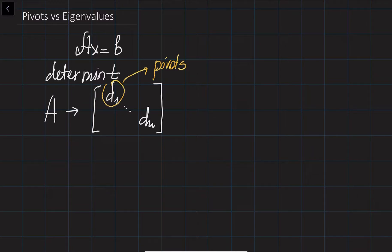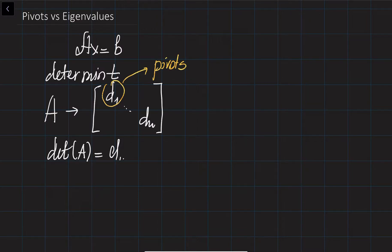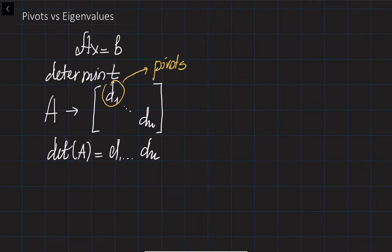So the determinant of the matrix is equal to the multiplication of its pivots. We also need the pivots to identify the rank of the matrix, because by definition the rank of the matrix is simply the number of pivots.